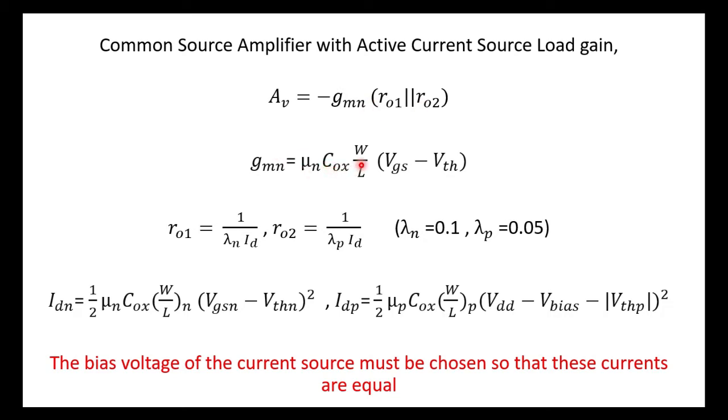So gmn as we have done it before: μn Cox W/L times (Vgs minus Vth). We are going to fix Vgs, we are going to fix Vth by using the level 1 model of transistor of the NMOS. So we are going to fix this μn Cox to 200 microampere per volt square by using the transconductance parameter Kp, and we are going to fix W and L also.